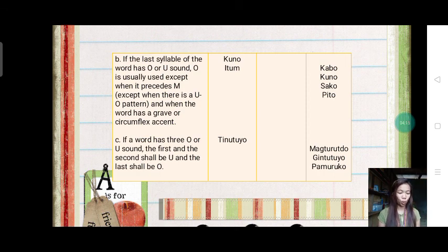When the word has two or more sounds of o or u sound, letter u is used in the first, the second, or third syllable, and on the last syllable is letter o.